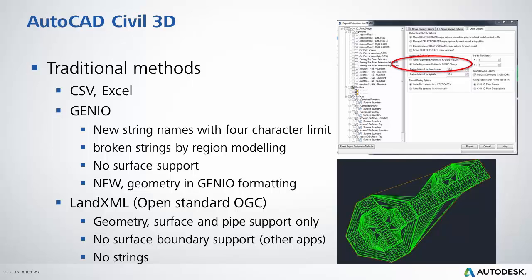Also, a legacy format is GenIO — it's what contractors are used to. There are a number of issues around using that format, especially with Civil 3D. One is the four-character limit of any string names, so it's not a like-for-like translation from your Civil model through to this format. Also, the output for GenIO is not necessarily clean consistent strings, as it's broken down by region.